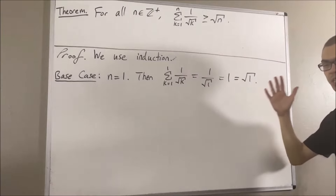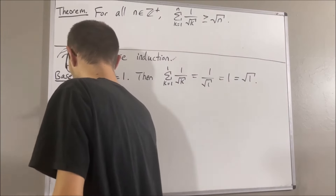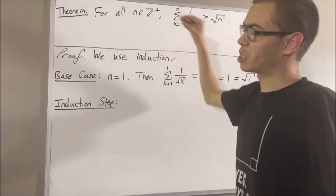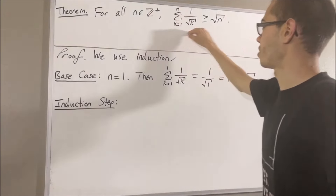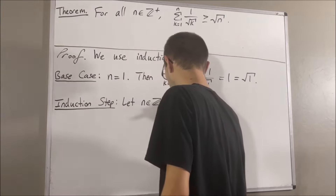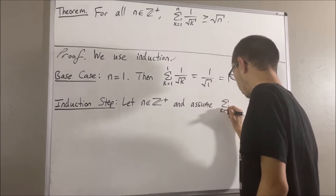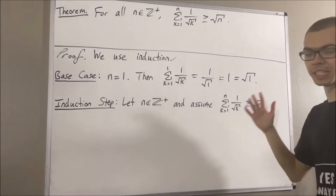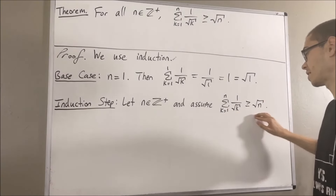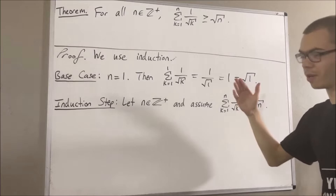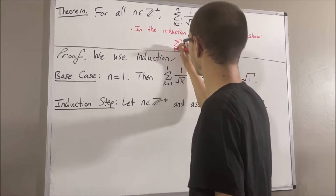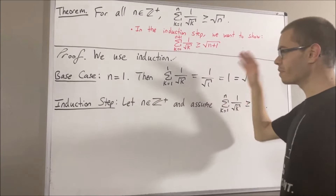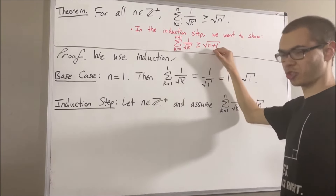Now let's move on to the induction step. In the induction step, we give ourselves an arbitrary positive integer n where the inequality is true. The whole goal of the induction step is to show that this is also true for n plus 1, which means we want to show that the corresponding inequality holds.